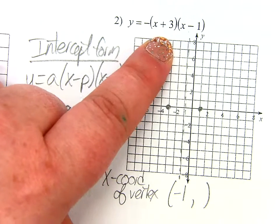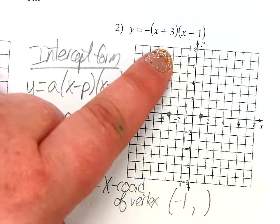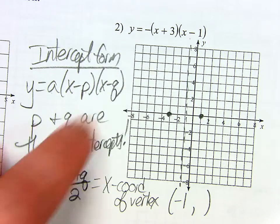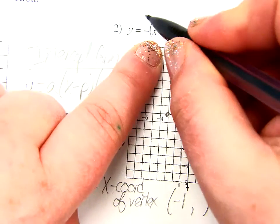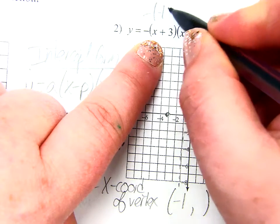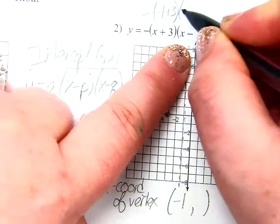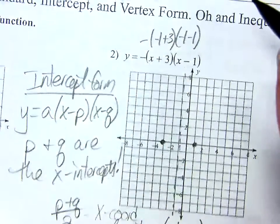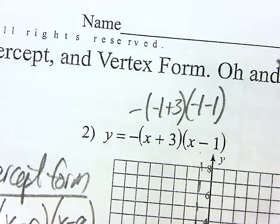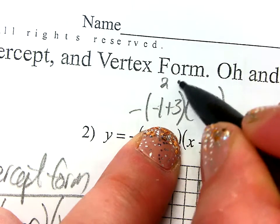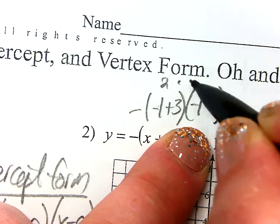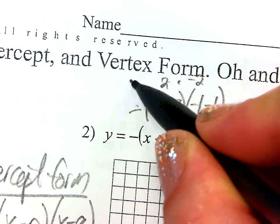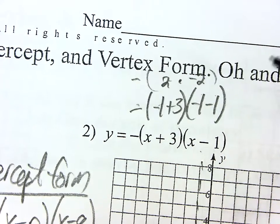A quick way to get halfway between them is to just take P and Q, add them together, and divide by two. That gets you the X coordinate of your vertex. So that means negative three plus one is negative two. Negative two divided by two is negative one. So that means my vertex is at negative one comma something. How do you suppose I find where the something is? Plug it back in, just like I always had to.